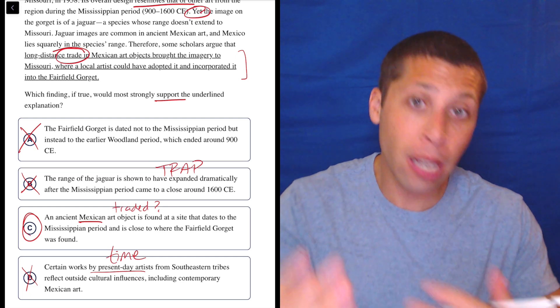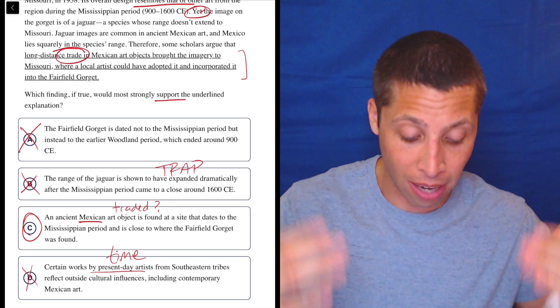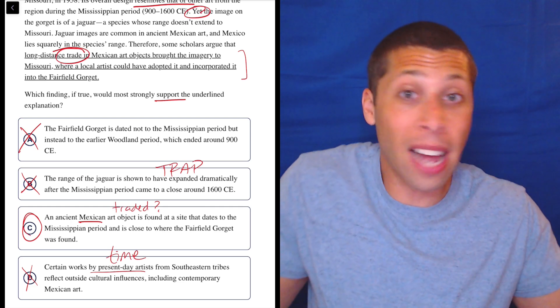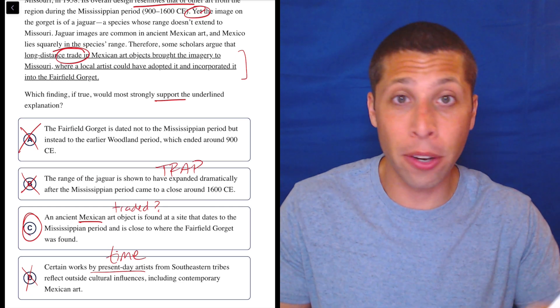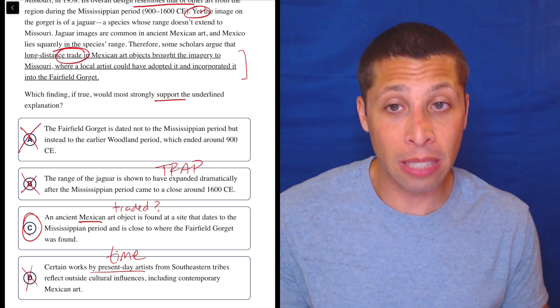They are doing it kind of a step removed, right? It's not that they're saying literally like this object got there because of trade. But if a Mexican object is in Missouri, it got there somehow, right? And maybe it got there the same way that news of the jaguar got there as well. So that's reasonable.